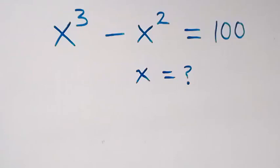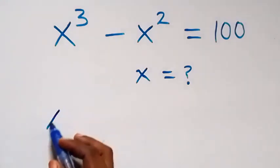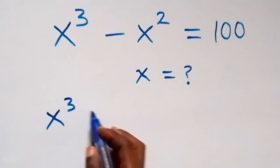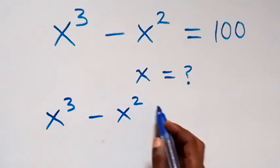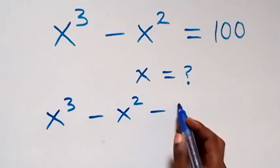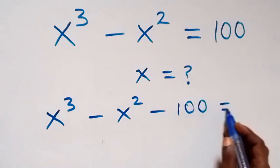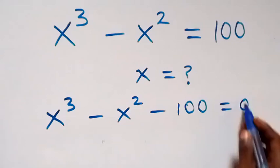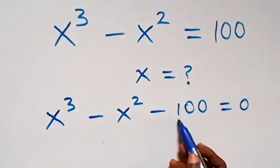Hello, you are welcome to Solve for X. Here, let's take 100 to this side — then this becomes x raised to power 3 minus x squared minus 100, and now equals 0 on this side. Then here, by inspection...